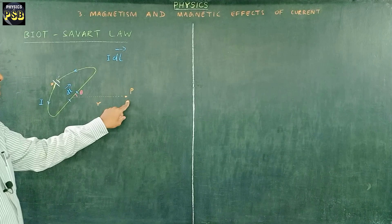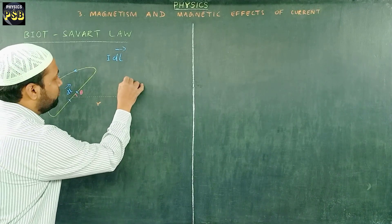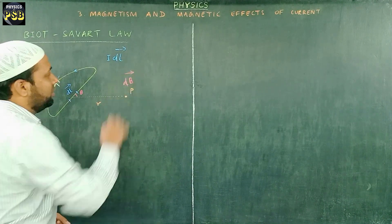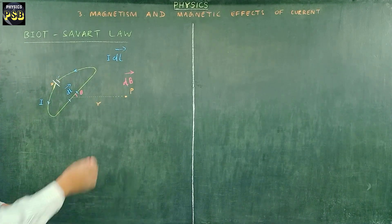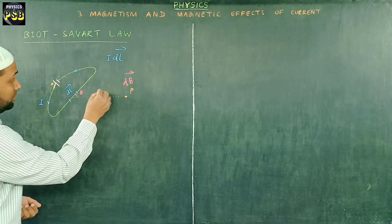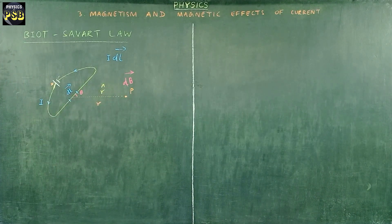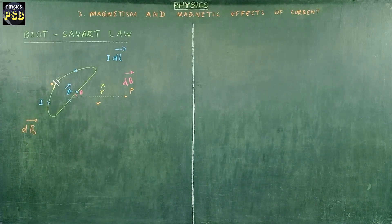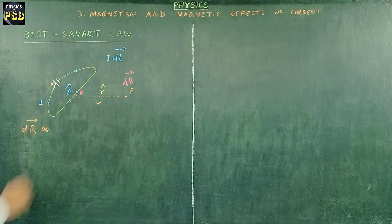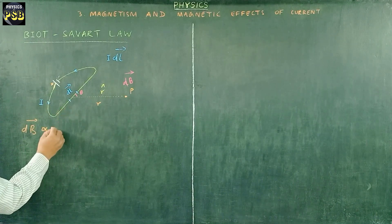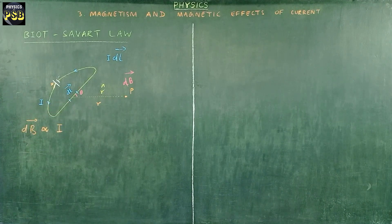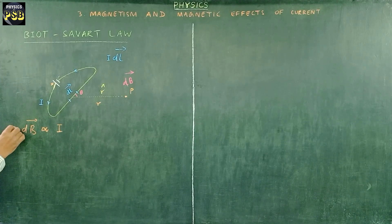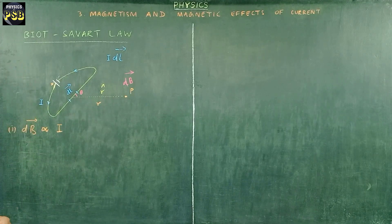Now at point P the magnetic field, the strength of magnetic field is denoted dB vector. Here r cap is a position vector. dB vector is found to vary proportional to the strength of current flowing through this current element, so dB is directly proportional to I. This is the first thing we get from Biot-Savart law.